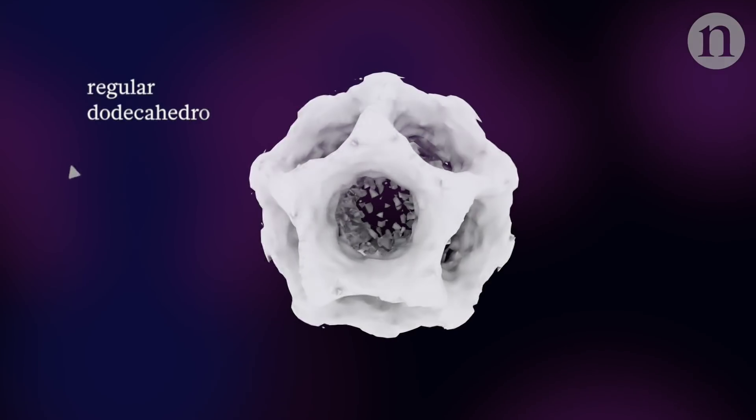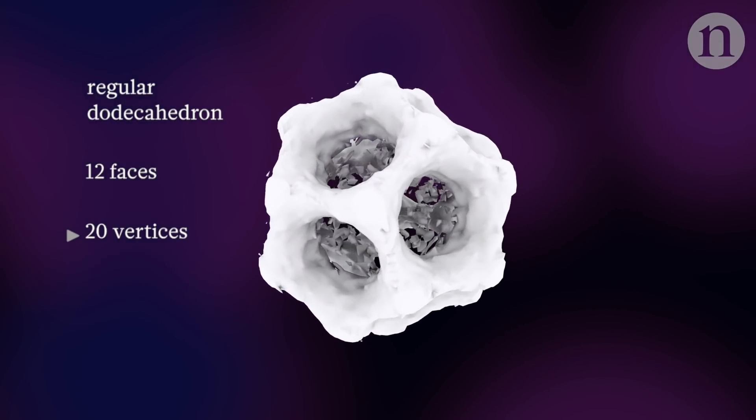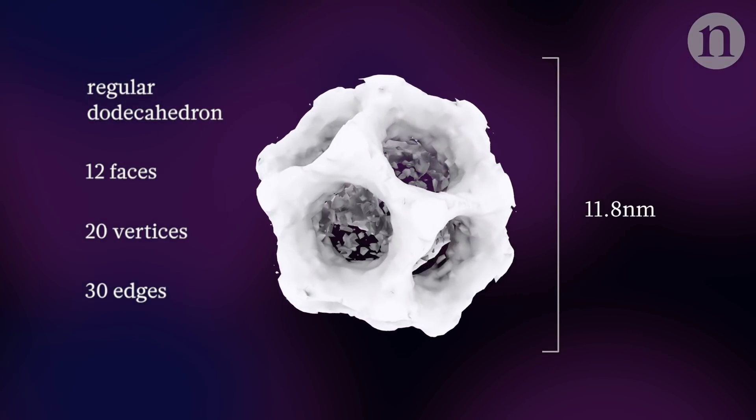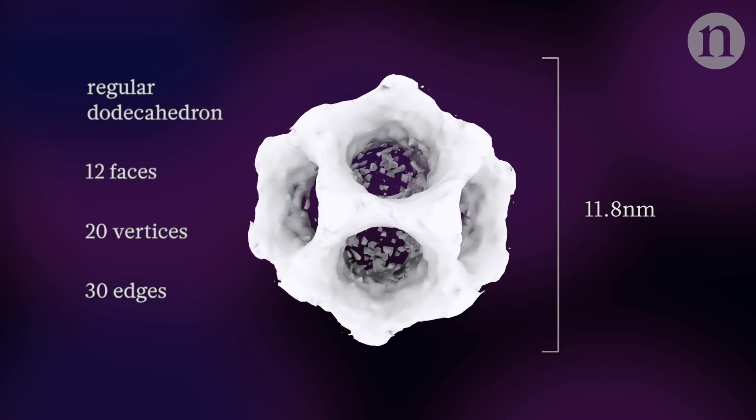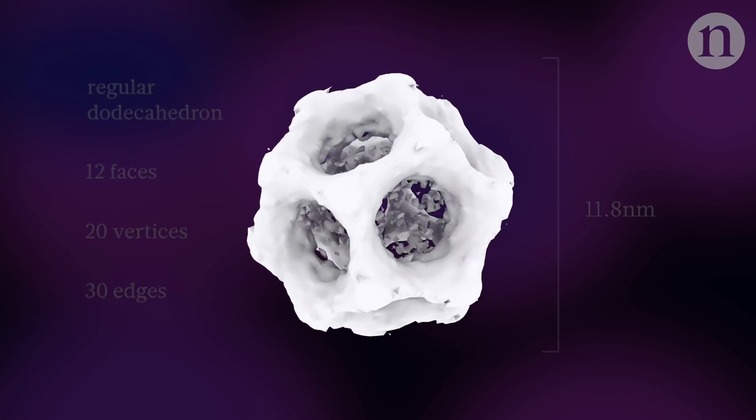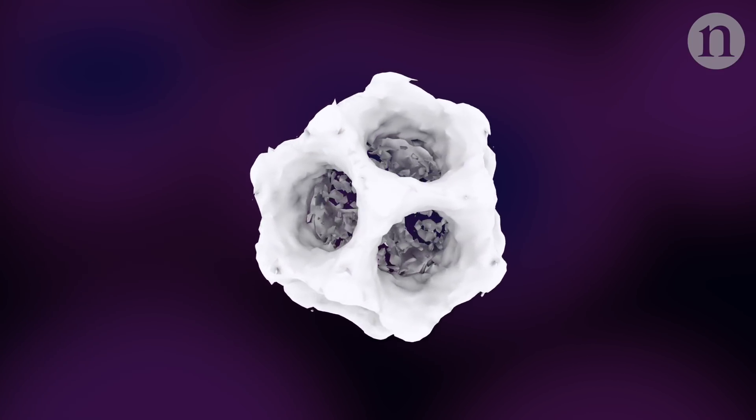This dodecahedral cage is made of silica and it's tiny, really tiny. It was created by researchers in the States who hoped that one day it could help in the fight against cancer.